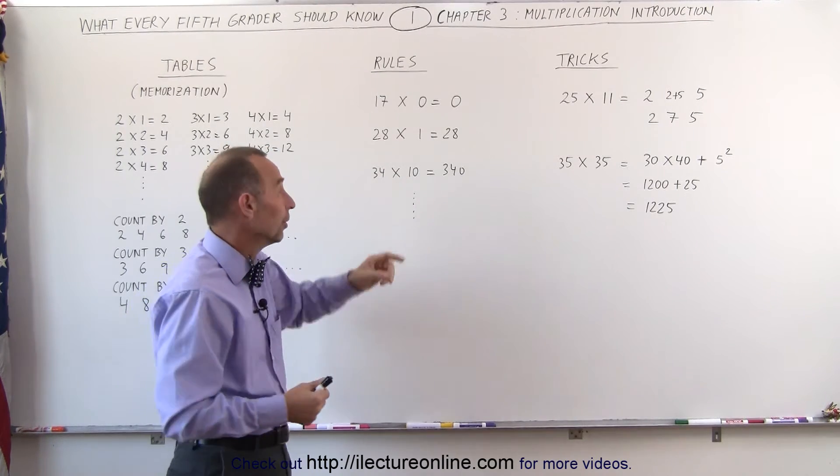Multiplying times 1, any number multiplied times 1, you simply get the number back. And when you multiply times 10, you simply move the decimal place over or simply add a 0 to the number. 34 times 10 is 340.